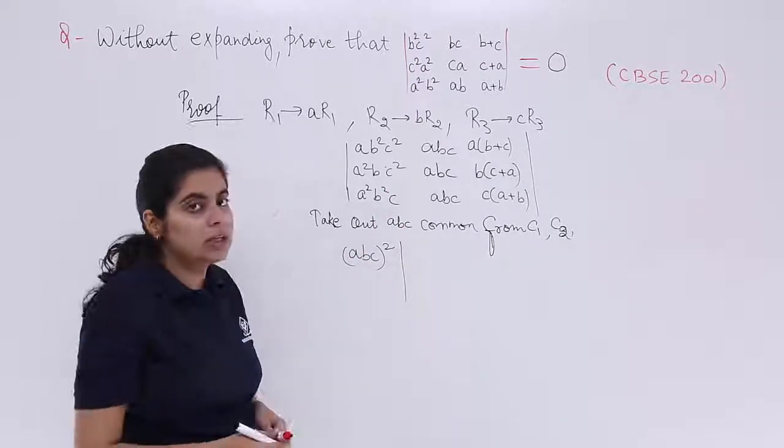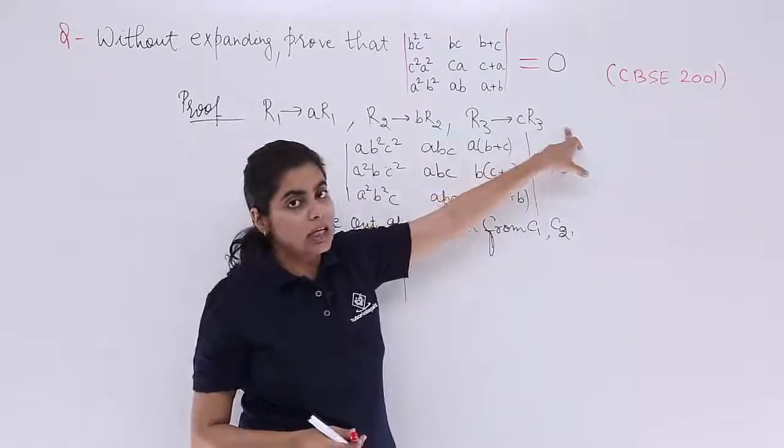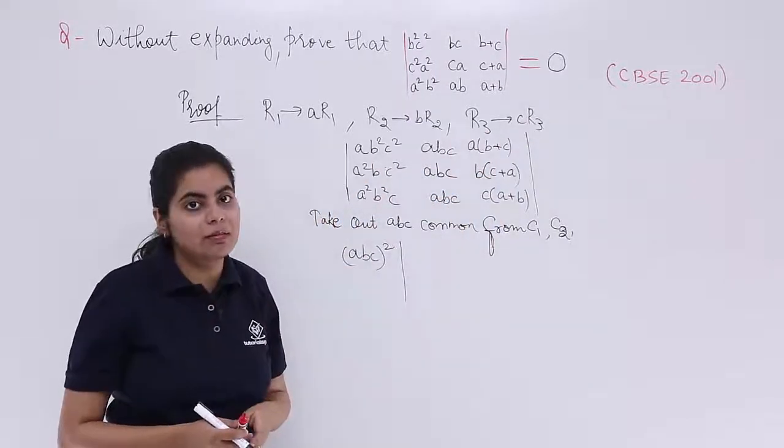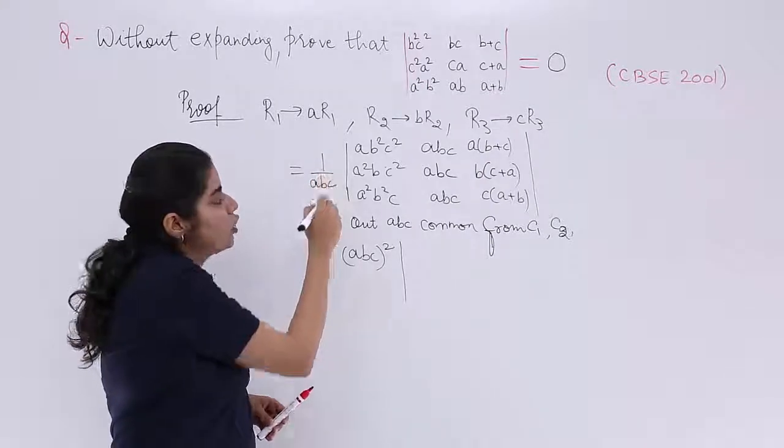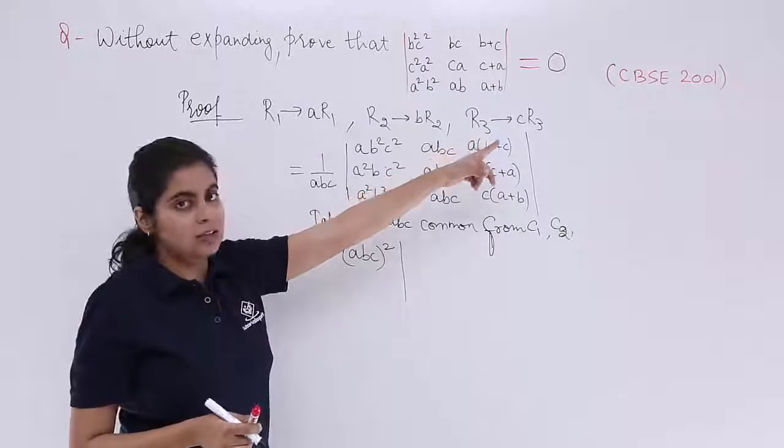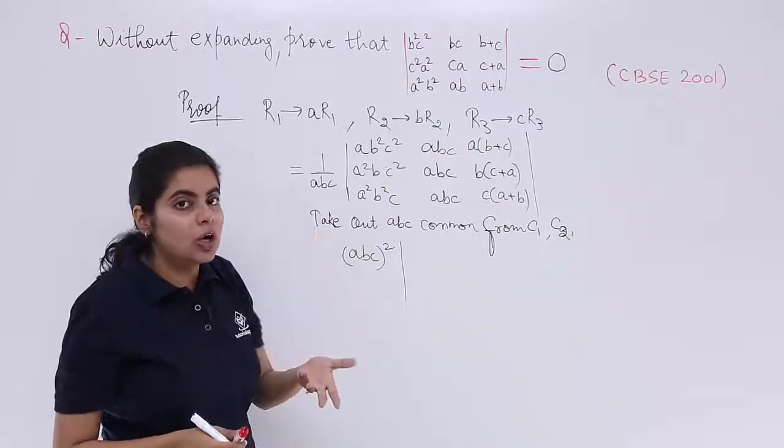And one more thing that if you multiply anything, then you have to divide also in mathematics. So here it basically is 1 by ABC also. Why? Because you multiplied and you didn't divide, then things would not nullify.